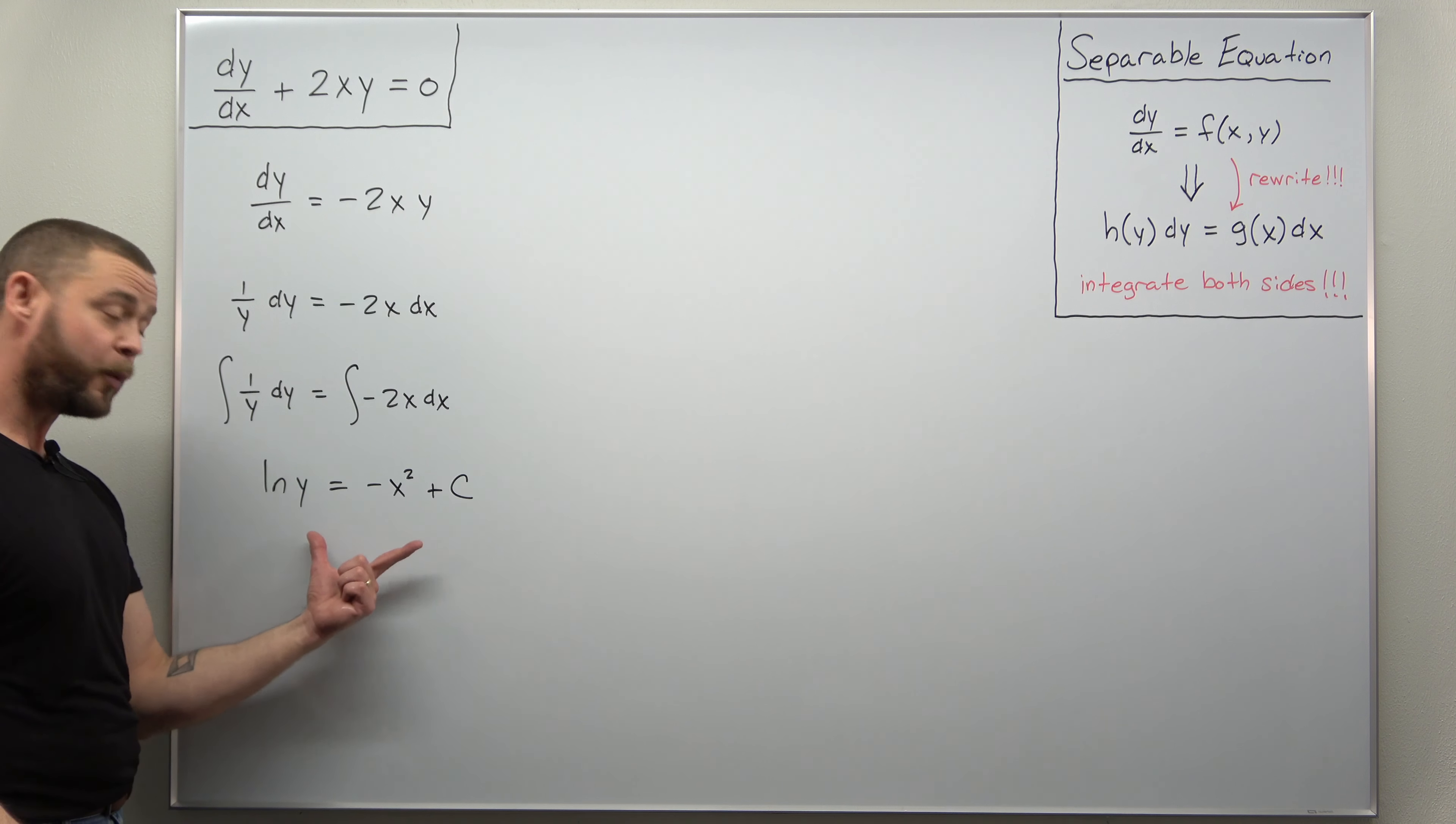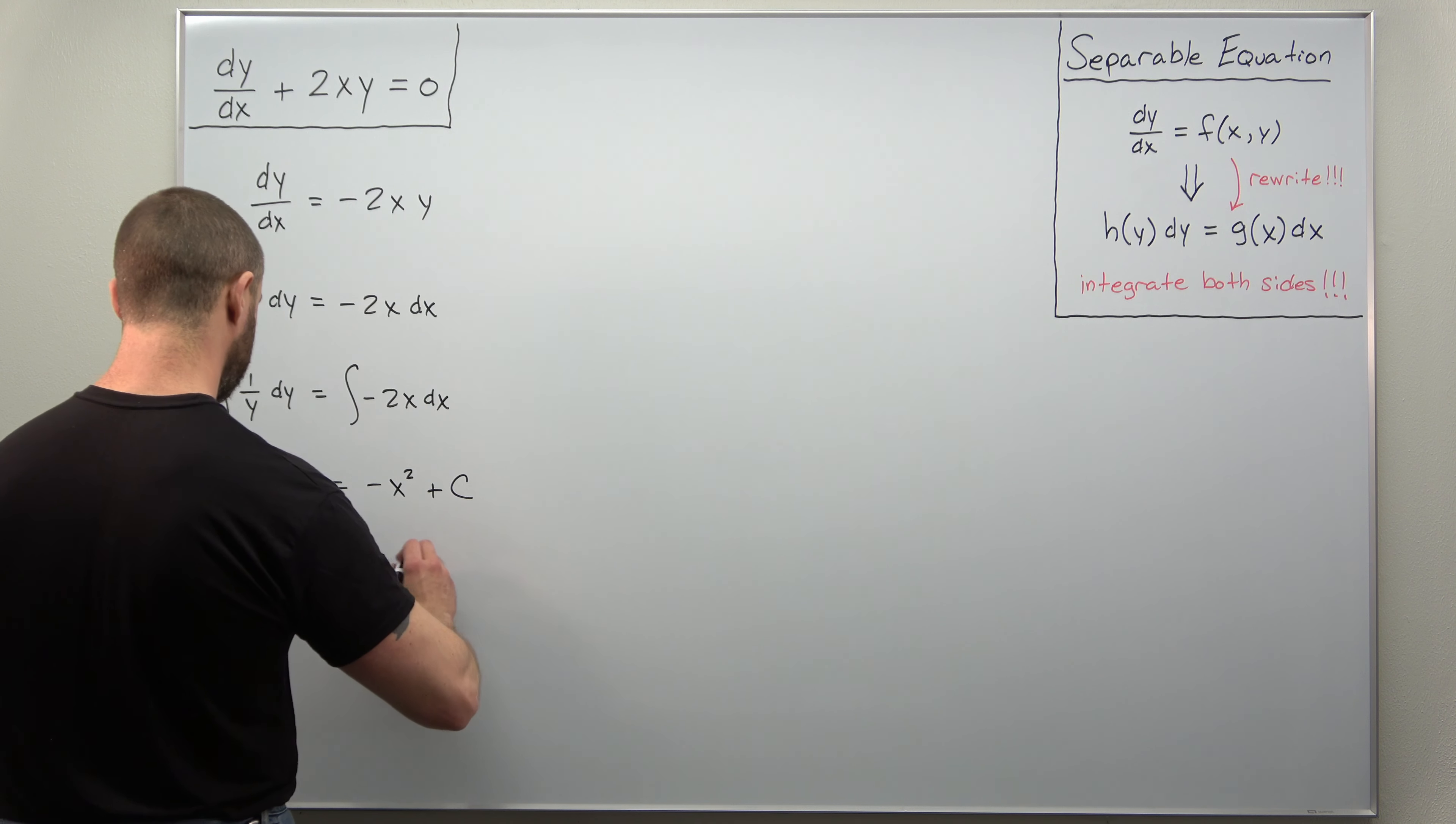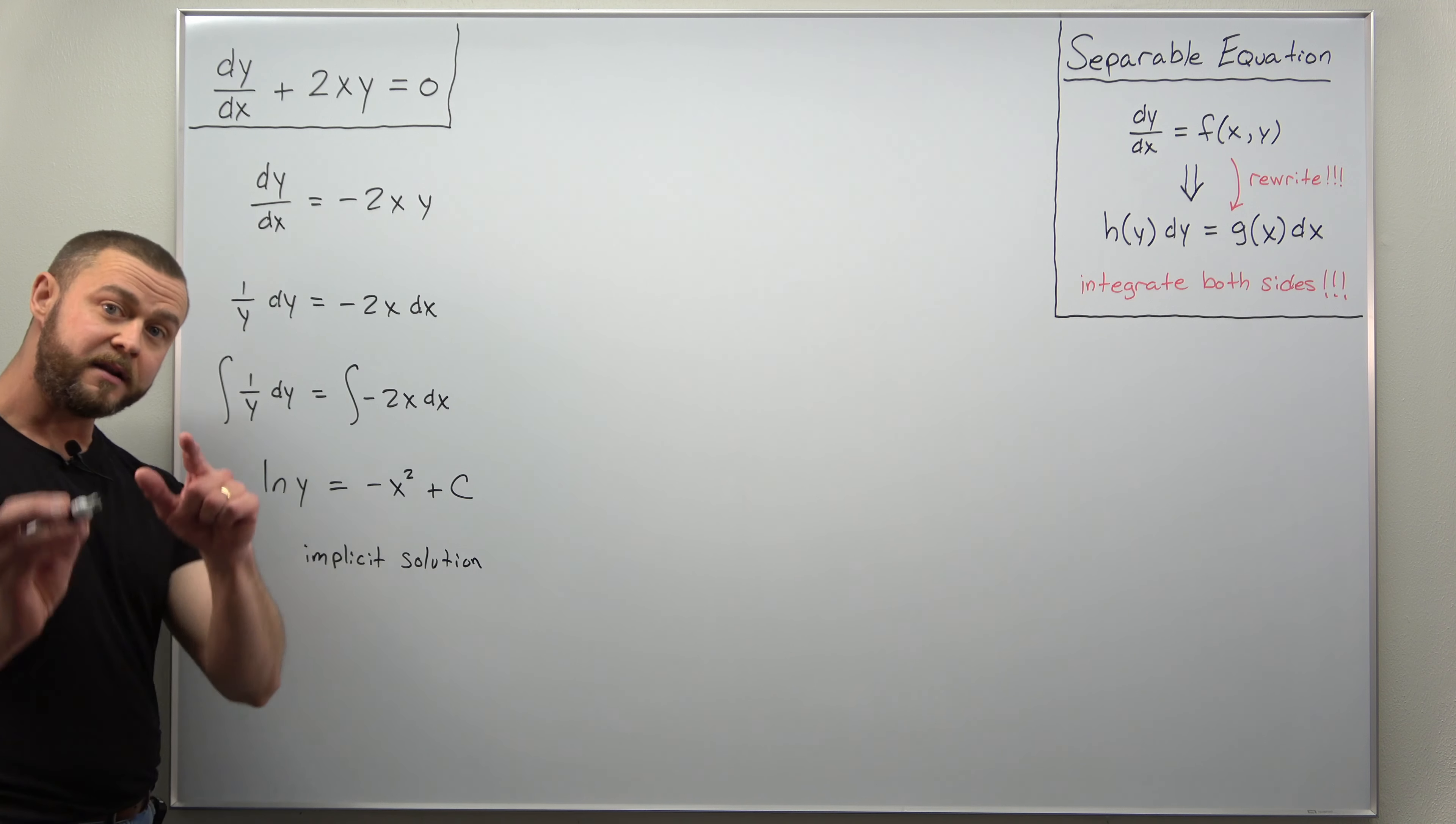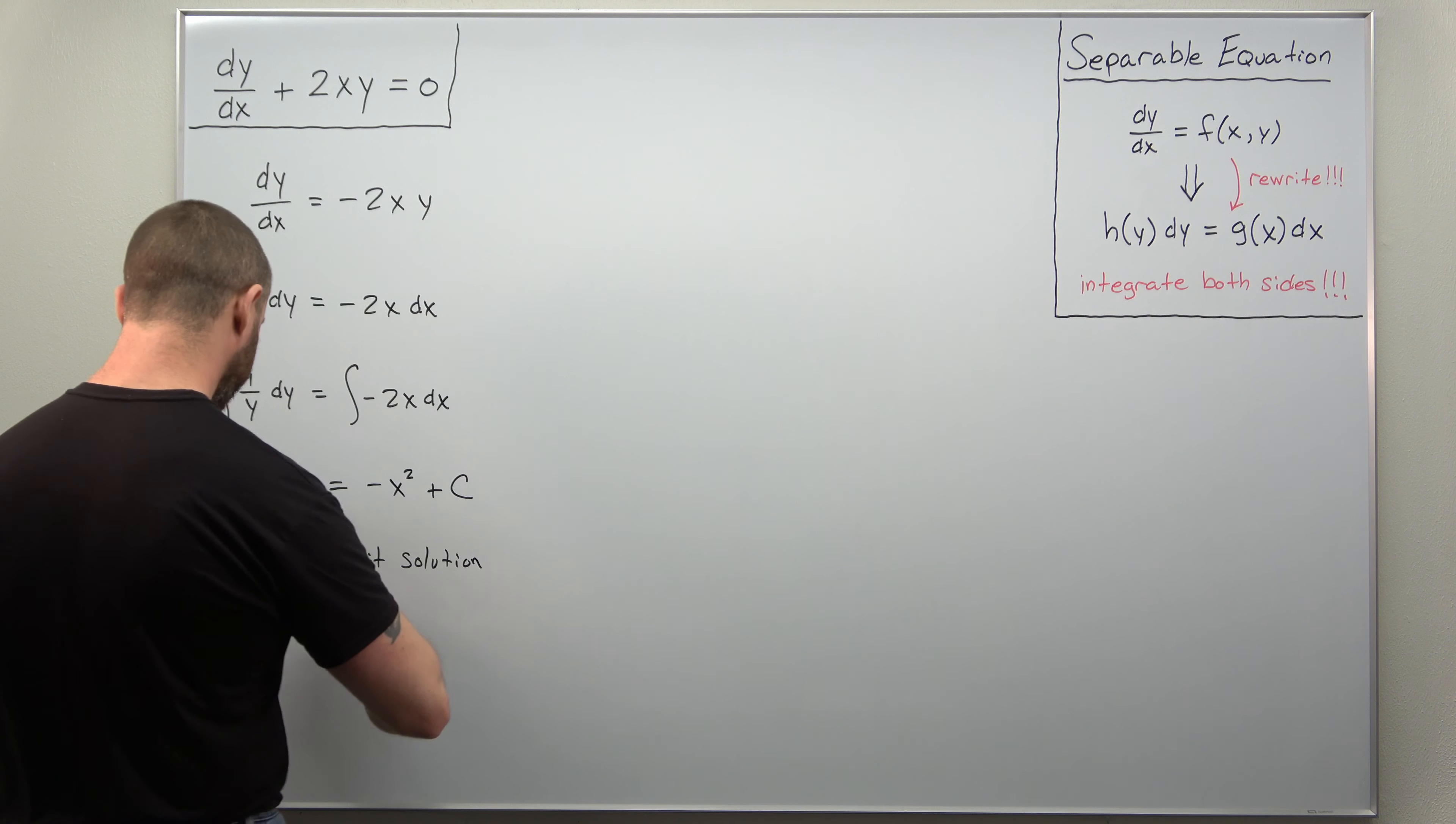And that's it. What we have here is what's sometimes called an implicit solution to our differential equation. And this is simply an equation or solution that's not solved for y.